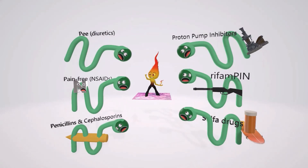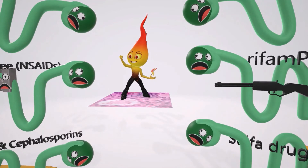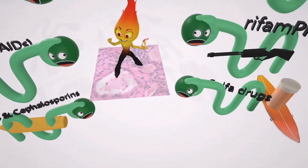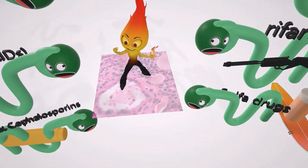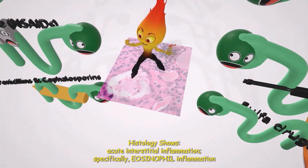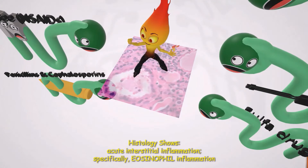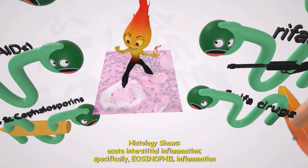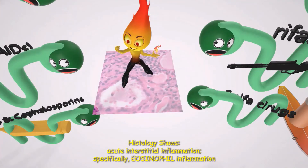Take a look at this interstitial inflammation guy levitating on top of this histologic picture of acute interstitial nephritis. We see two things: first, inflammation in the interstitium between the tubules, and also eosinophilia. Just remember that eosinophilia seen on histology is almost always seen in acute interstitial nephritis.